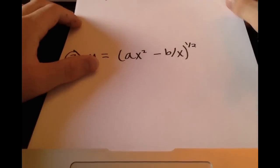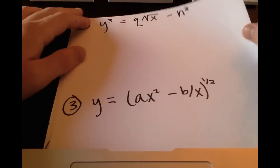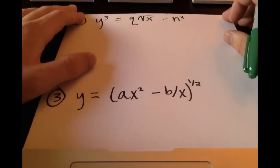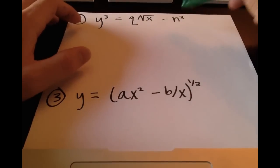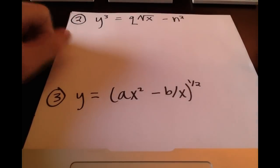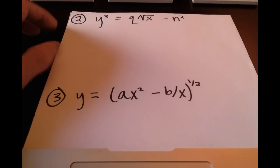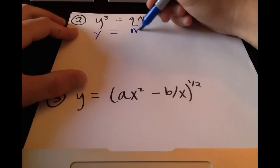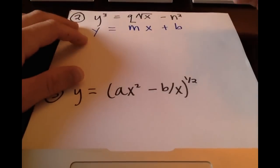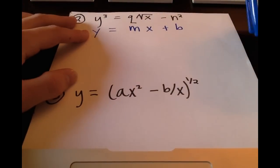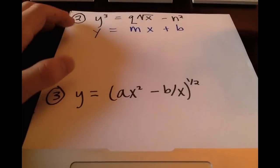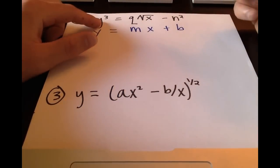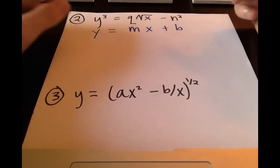Sometimes you'll have to manipulate these, and we'll get to one of those problems soon. For this example, y³ = q√x - n². Let's once again write y = mx + b. You don't have to do this every time - I just recommend doing it the first couple times when you're getting used to this format. You write this and can make the correlation once you get your manipulated equation into the form y = mx + b.